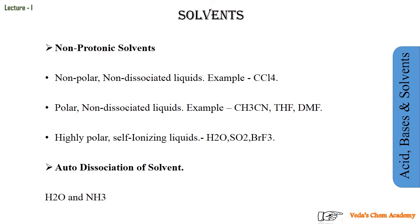Lastly, we have highly polar and self-ionizing liquids. The best example is H2O. There is a large electronegativity difference between hydrogen and oxygen, making it highly polar. They are also self-ionizing — when H2O reacts with H2O, one acts as acid and another as base, giving H3O⁺ and OH⁻. Similarly, SO2 undergoes self-ionization to give SO²⁻ and SO3⁺. Finally, auto-dissociation: H2O gives H⁺ and OH⁻, and NH3 undergoes auto-dissociation as well.